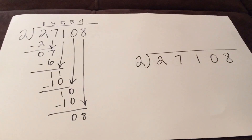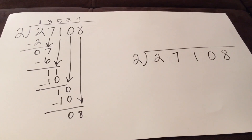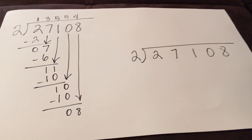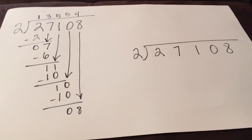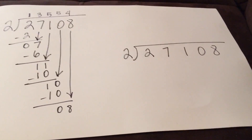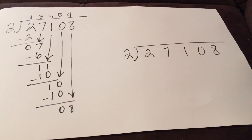Bring down my eight — two goes into eight four times. So the answer to this would be thirteen thousand five hundred fifty-four. Fine, but let me show you how to solve this using the shortcut method.